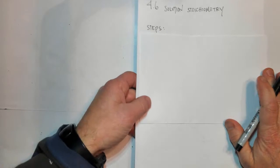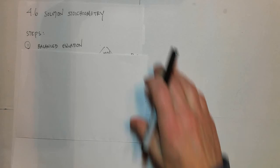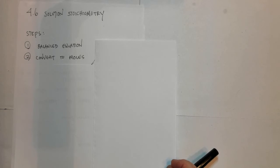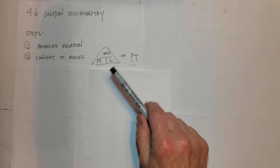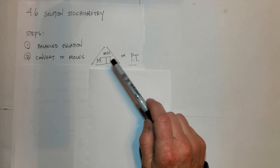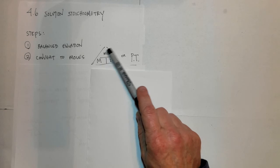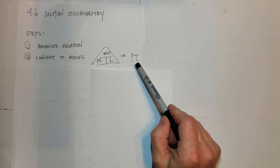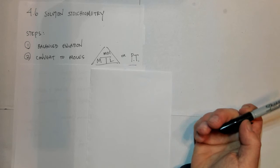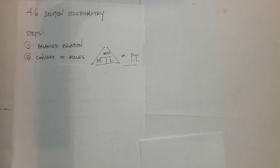Solution stoichiometry is very similar to the stoichiometry you learned back in Chapter 3, where there are four and a half steps. Step number one is to write the balanced chemical equation. Step number two is to convert to moles, except now you know another way to convert to moles — you know the molarity triangle — and so many times they'll give you a volume and a concentration and ask you to find moles. They could also ask you to use your periodic table because they might give you grams, or at the end they might want the grams as well.